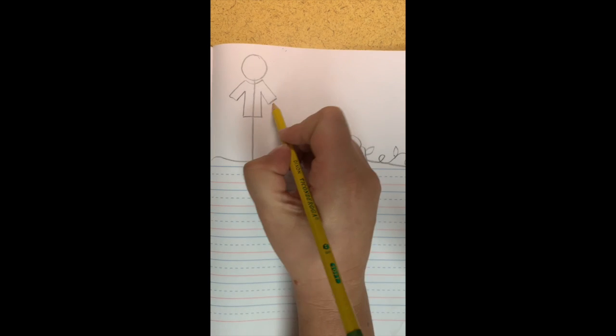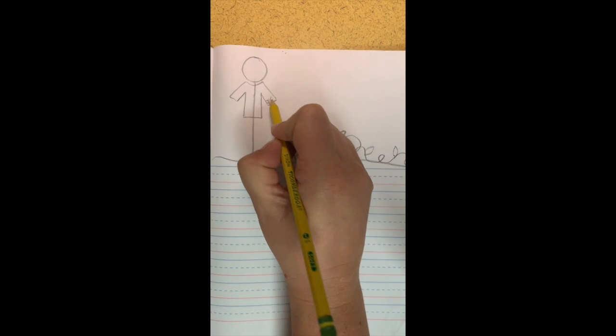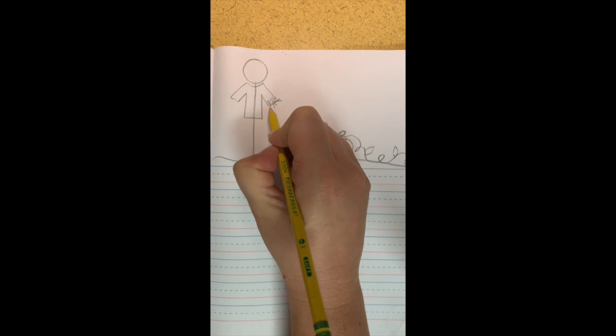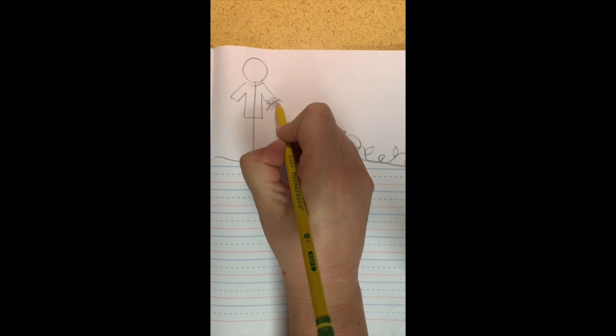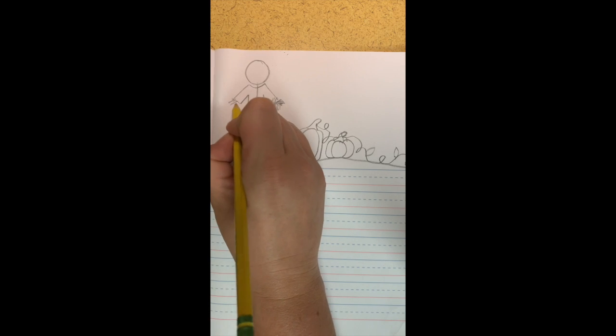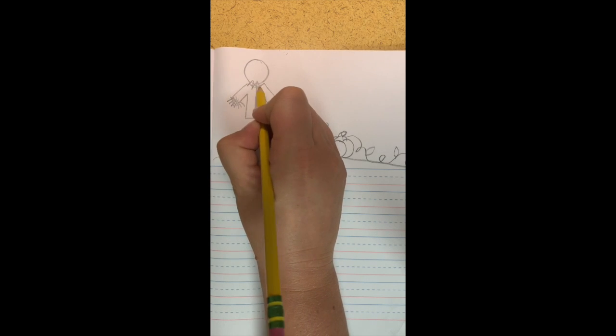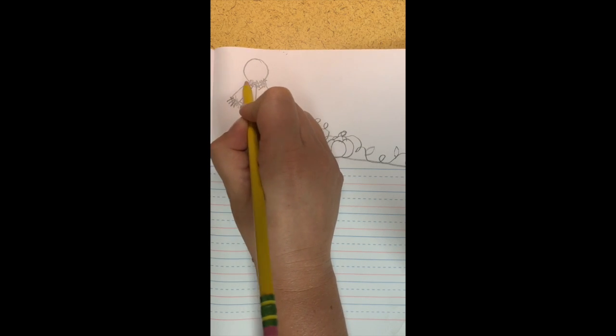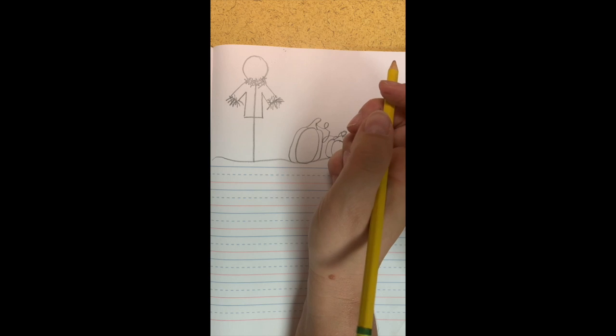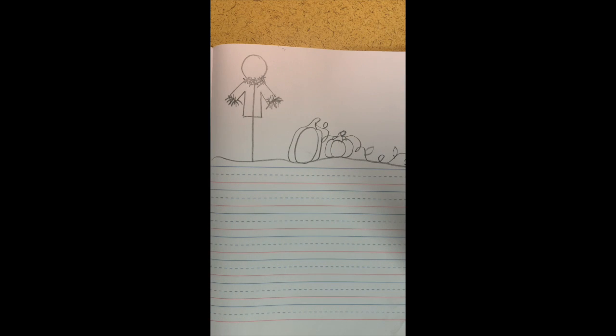Now scarecrows have hay coming out so I want you to draw some crazy lines coming out of the end. He doesn't have hands. He's going to have hay. So draw some lines like that coming out of the end of your scarecrow and in the neck too. Remember you can always pause if you need to.